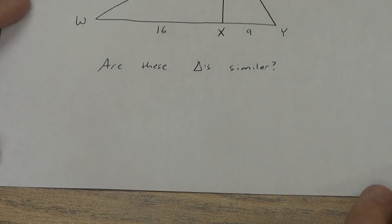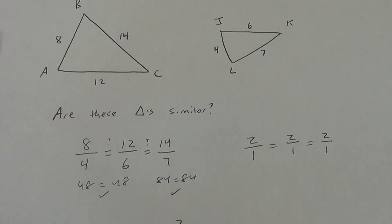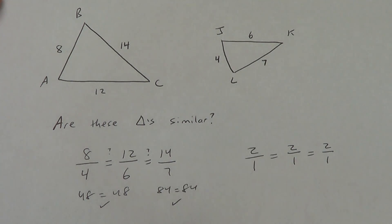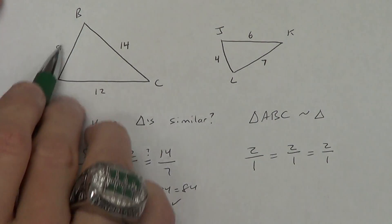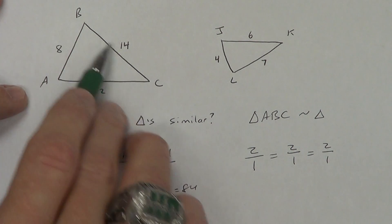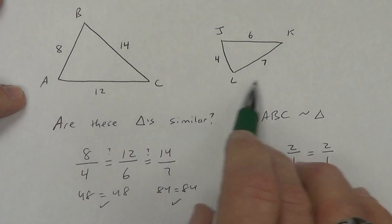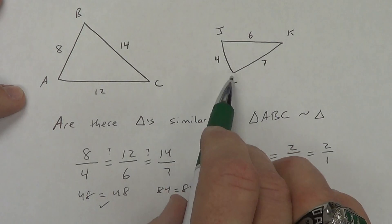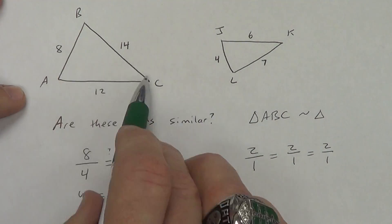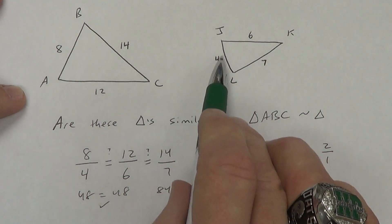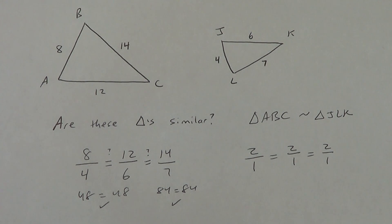I also want you to be able to name similar triangles — it will be on homework, quizzes, and tests. Triangle ABC is similar to... AB is the shortest side and BC is the longest. On the other triangle, JL is the shortest. Since BC was the longest and 7 is the longest on the other side, I need to finish with K, giving me Triangle JLK. Order must reflect matching sides.